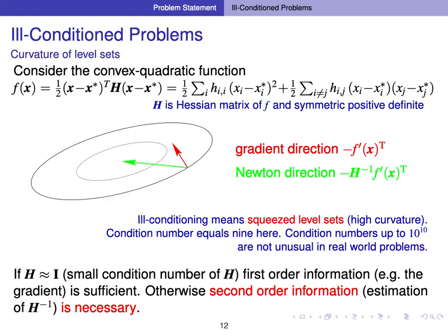Ill-conditioned problems are those whose level sets have a high curvature. Consider a convex quadratic function with the Hessian matrix H, which is a symmetric positive-definite matrix. The level sets of this function have an elliptic shape. If the condition number of the Hessian — the ratio between the greatest and smallest eigenvalues — is relatively small, then first-order information is sufficient and gradient descent works well. On the other hand, if the condition number is higher, we need second-order information, as in the Newton method, to efficiently solve this problem. This is where covariance matrix adaptation comes into play.